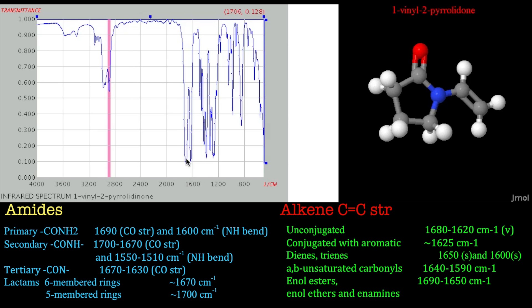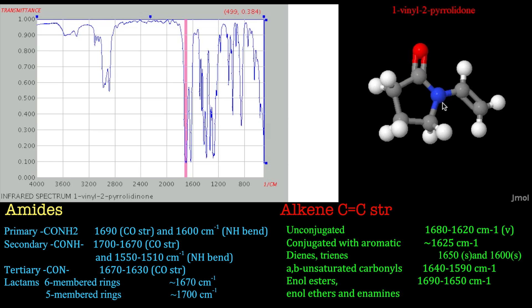We've got this big peak here. This should be pretty easy to spot, because this is your carbonyl, and everyone should be used to carbonyls now. It looks like it's a little bit low, and that's simply because it's an amide — it's got nitrogen connected to the carbon.